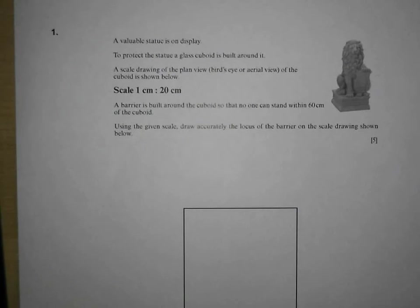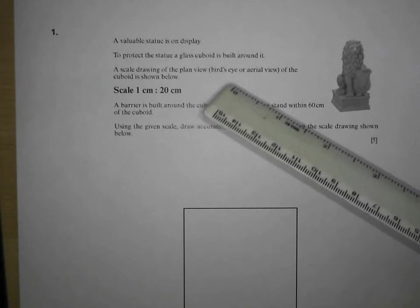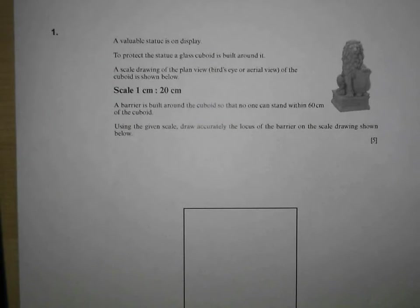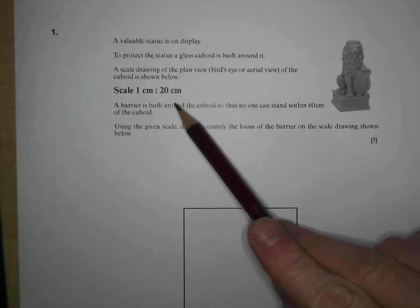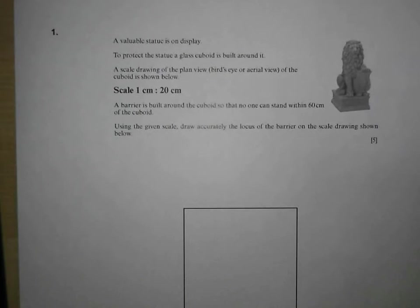Let's have a look at question number one. A valuable statue is on display. To protect the statue, a glass cuboid is built around it. A scale drawing of the plan view of the cuboid is shown below, and we've got a scale of 1 cm to 20 cm. Scales are the key in all these loci questions.